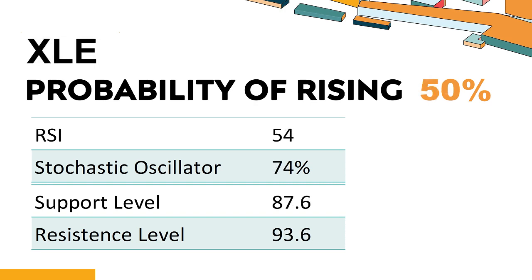What are the key technical drivers for XLE? The 14-Day Relative Strength Index (RSI) value of XLE was 54. When the RSI is between 50 and 70, it generally indicates that the stock is moderately bullish. This means that the security's price has been rising but has not yet reached overbought levels, which are usually considered an RSI reading of 75 or higher.